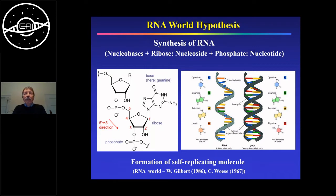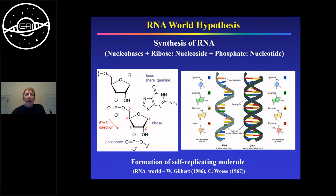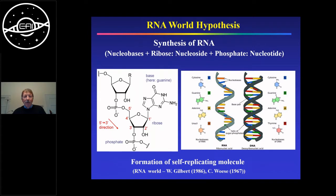What do we actually need for synthesis of RNA? We have the nucleobase — in this case guanine — we have the ribose sugar, and that's the only difference between DNA and RNA. These two components together form the nucleosides. We also need phosphates, which allow us to build larger chains and polymers. This looks pretty simple, but in fact it is not.